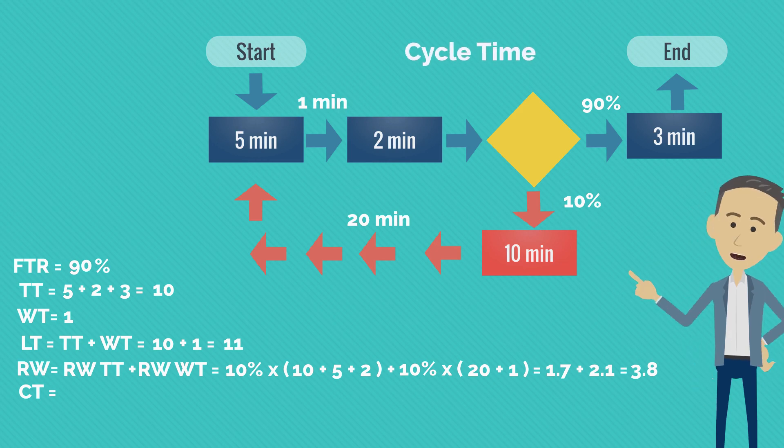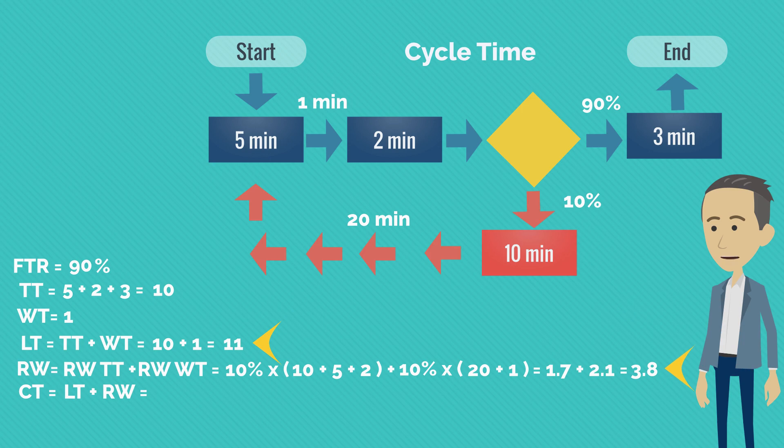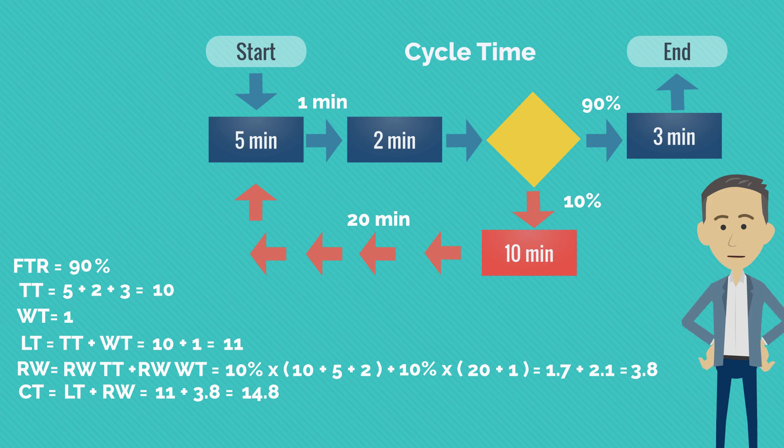And finally, cycle time. Cycle time is the sum between lead time and rework, and with no surprise it is exactly 14.8 minutes, same as before. So yes, we got to the same result, but now we know so much more about our process.